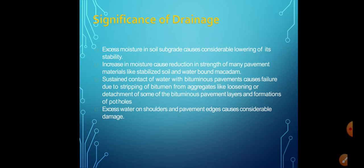An increase in moisture content causes a decrease in the strength and stability of the soil mass which supports the pavement layer. Variations in soil strength and the magnitude of deformation due to the application of traffic load, with variations in water moisture content, depend on the soil type and the mode of stress applications.